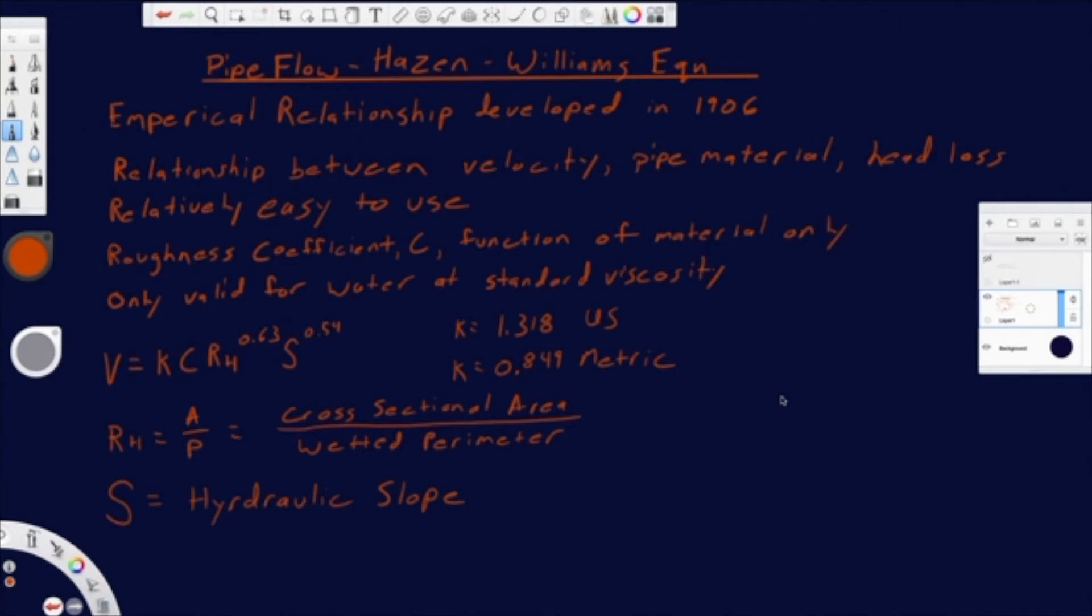If you're talking about a solution of water, maybe you've got suspended material or some other sort of constituents within water as a solvent that might change its viscosity, then you're starting to deviate away from where Hazen-Williams would be reliable.